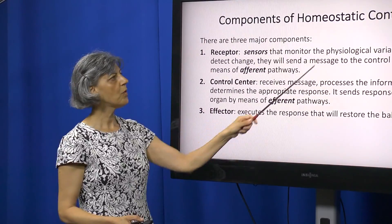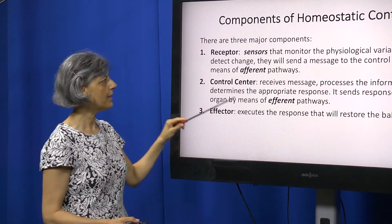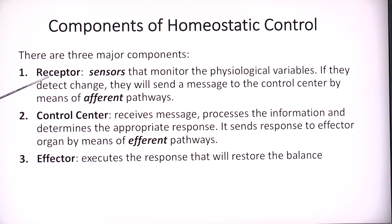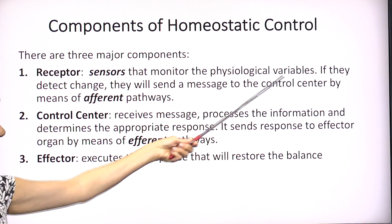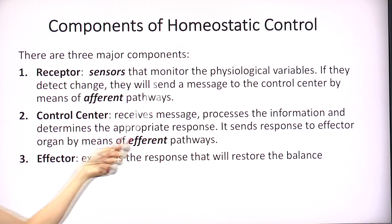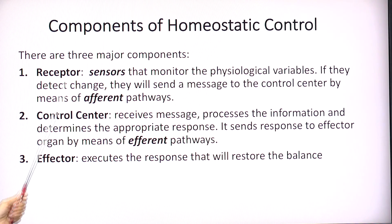What are the components of homeostatic control? There are three main components: first, a receptor; second, a control center; and third, an effector. A receptor is a group of sensors in the body that always monitor normal physiological levels. If at any time there is a disturbance in the level of a variable, this is detected by the receptor, which then sends a message to the control center.